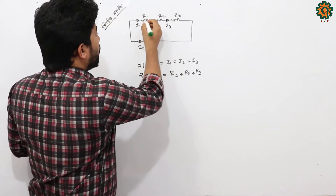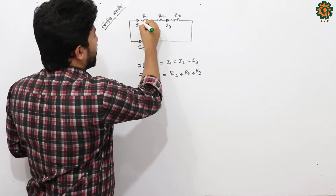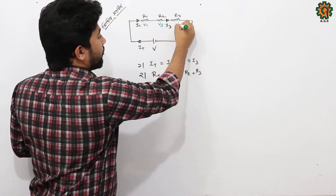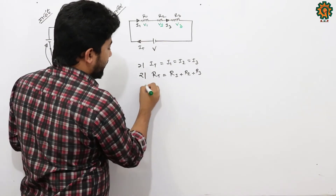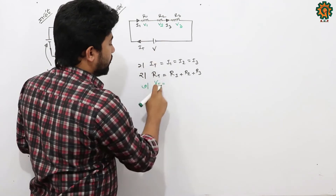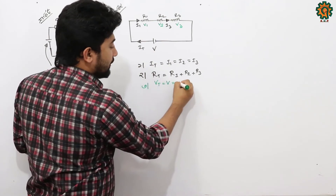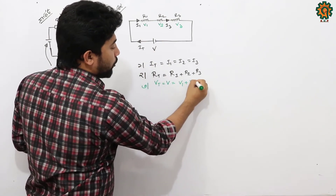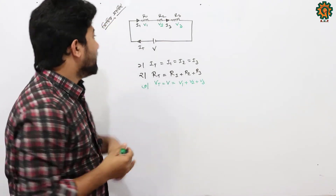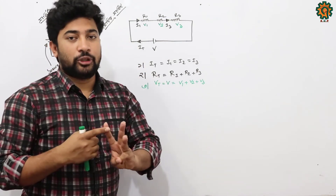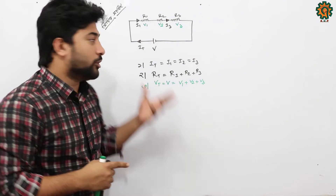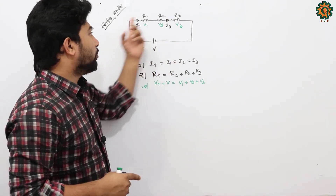If we call a point of voltage V1, we call a point of voltage V2, and we call a point of voltage V3. So we have three voltage values: Vt equals V1 plus V2 plus V3.